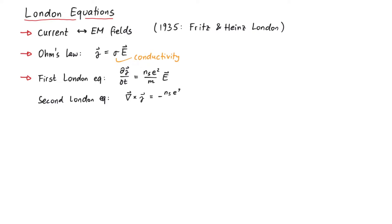Here, Ns is interpreted as a number density of superconducting electrons, E is the electron charge, and M is the electron mass. Note that the London equations cannot be derived, rather cleverly motivated. Let's go over two possible ways to arrive at the London equations.